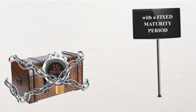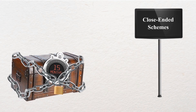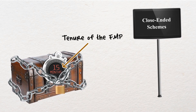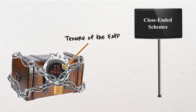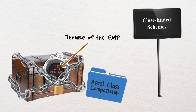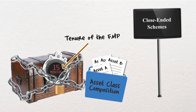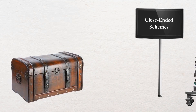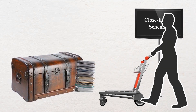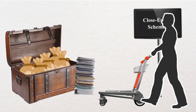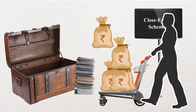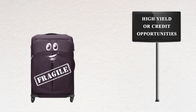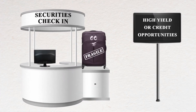Fixed maturity plans are funds with a fixed maturity period. These are close-ended schemes, and an investor should know the tenure or period of the FMP and its asset class composition before investing. At the end of the period, the units of the scheme are redeemed and the maturity proceeds are given to the investor.